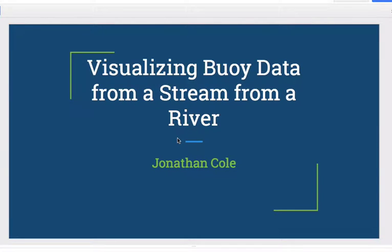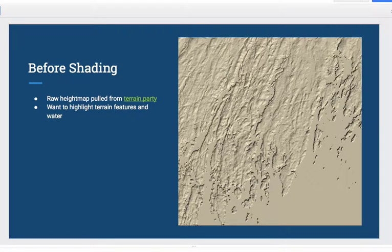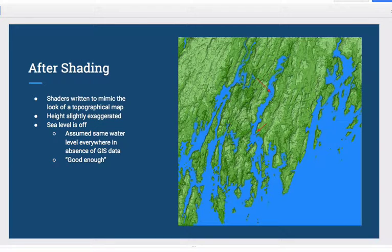John Cole implemented a final project using real-time buoy data from the Gulf of Maine and visualized them in 3D. The buoys are located in the Gulf of Maine and there are up to seven or eight buoys. He selected two buoys that are in the Damariscotta River. His final project is to build this visualization environment in 3D, and here we can see the dots showing where the sensor stations are.